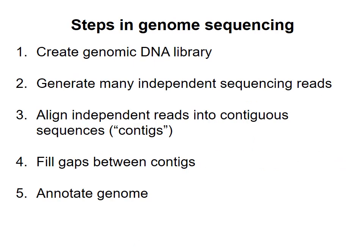The steps used to sequence the Haemophilus influenzae genome are shown here. First, the researchers generated a genomic library containing random fragments of the genome. Then they sequenced parts of these fragments to create a large number of independent sequencing reads, each read representing about 500 base pairs of the genome. A computer aligned these sequencing runs into longer consecutive stretches of DNA called contigs. Gaps between the contigs were filled to obtain the entire genome sequence. Finally, the genome was annotated to look for genes and other important regions.